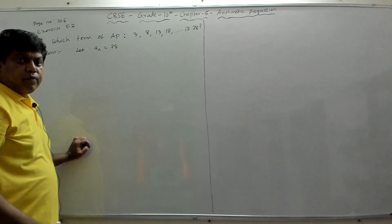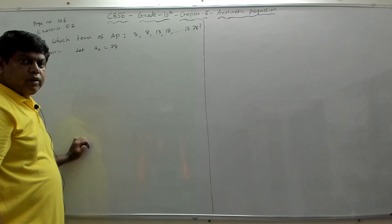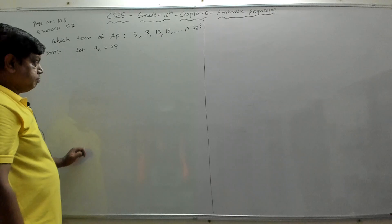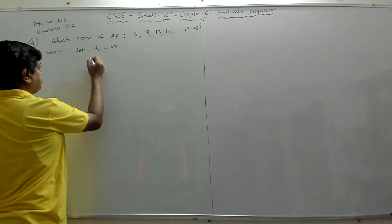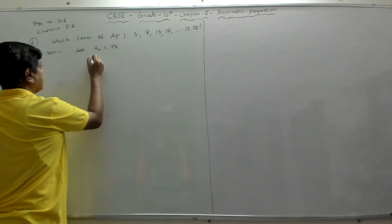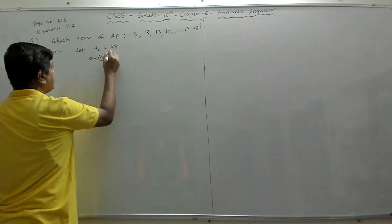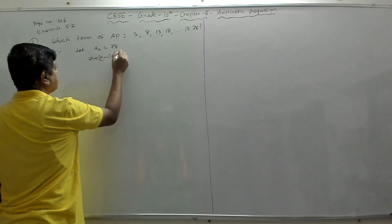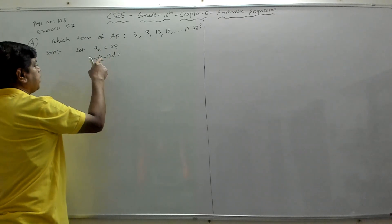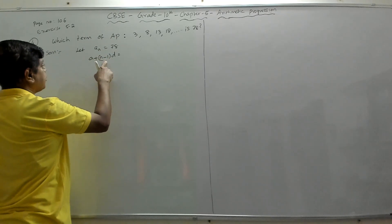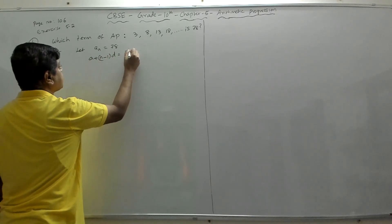We are assuming the nth term of the AP is 78 and we have to find the value of n. The formula for the nth term is: an = a + (n−1) × d, and that is equal to 78.